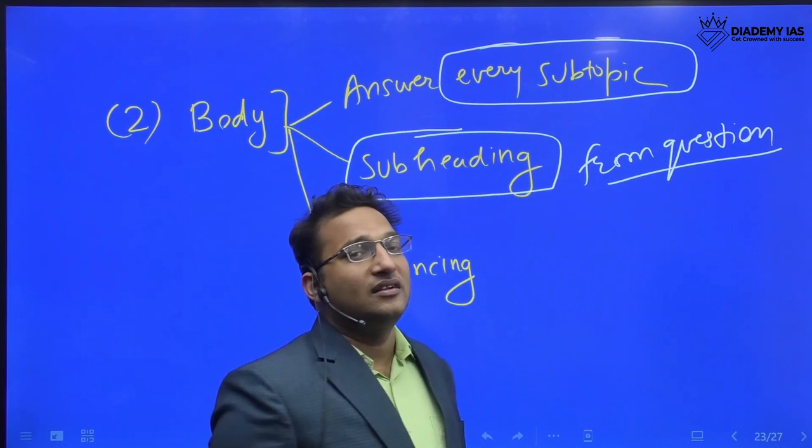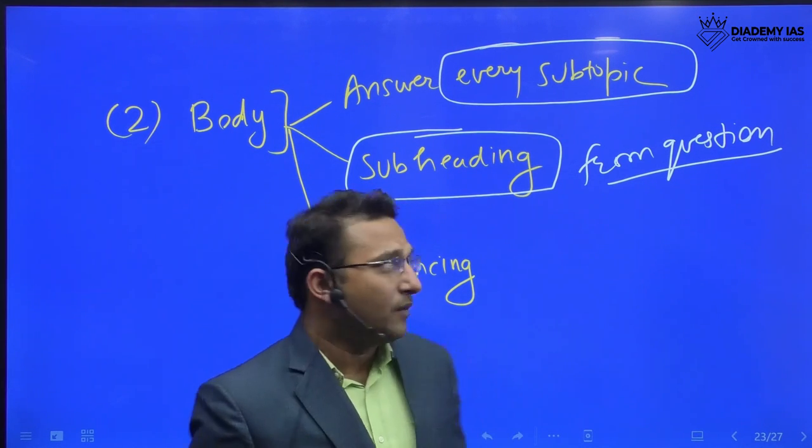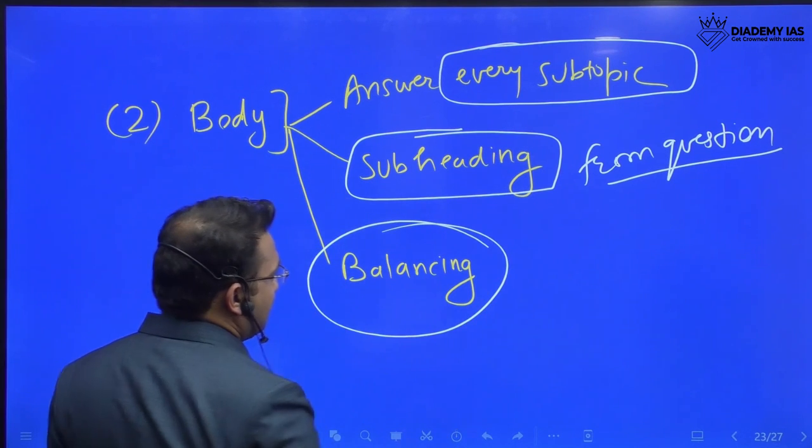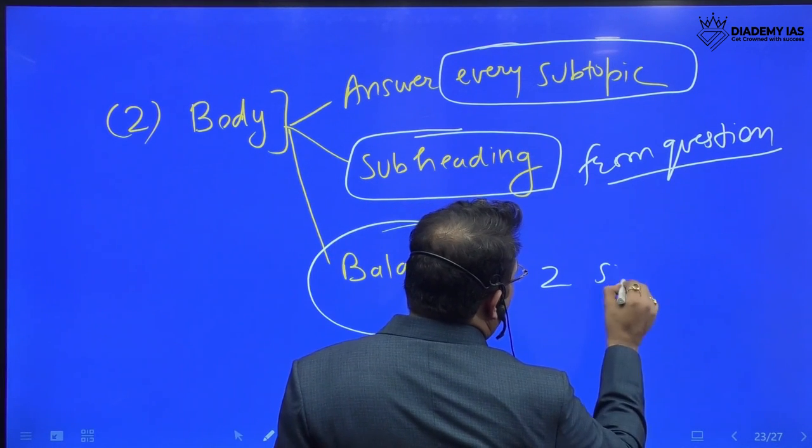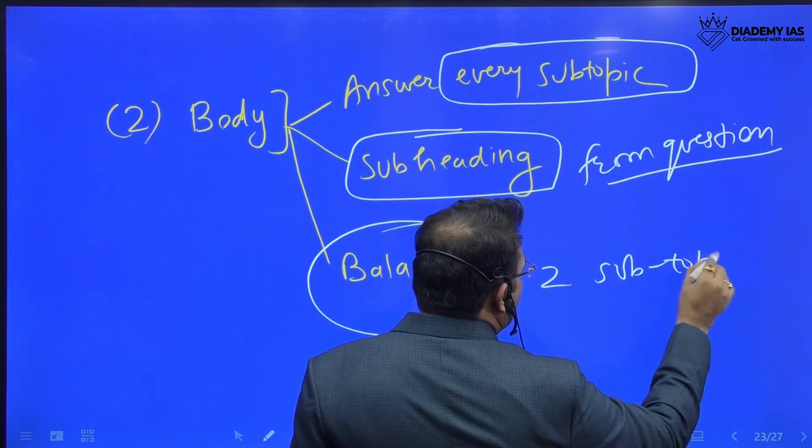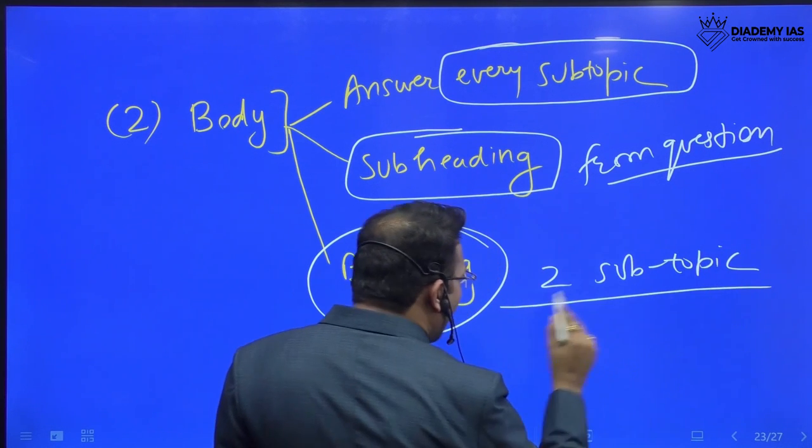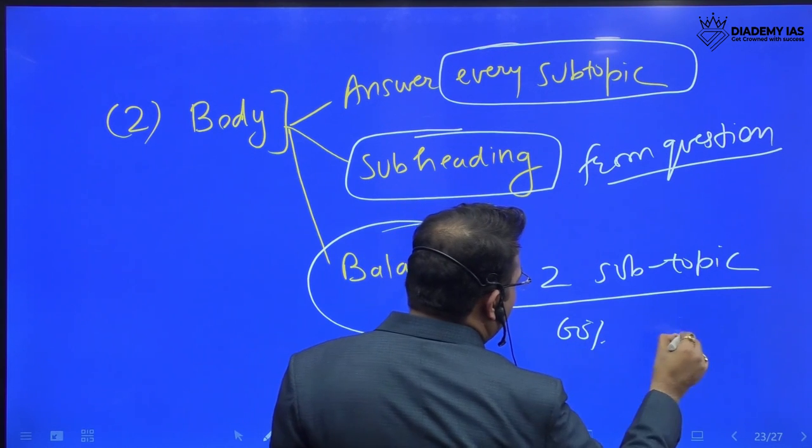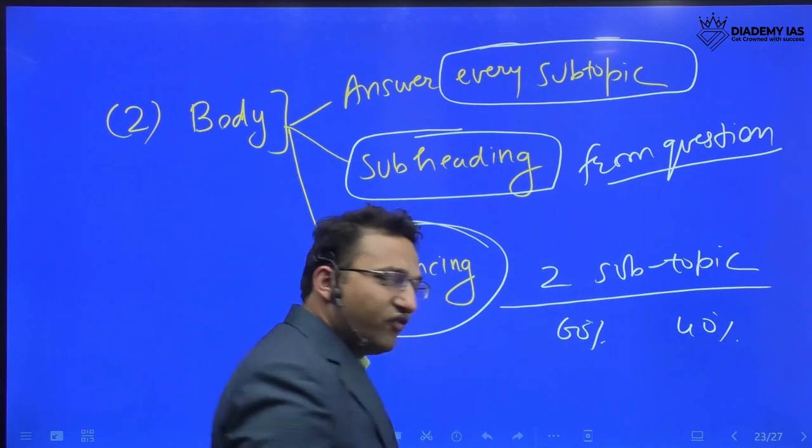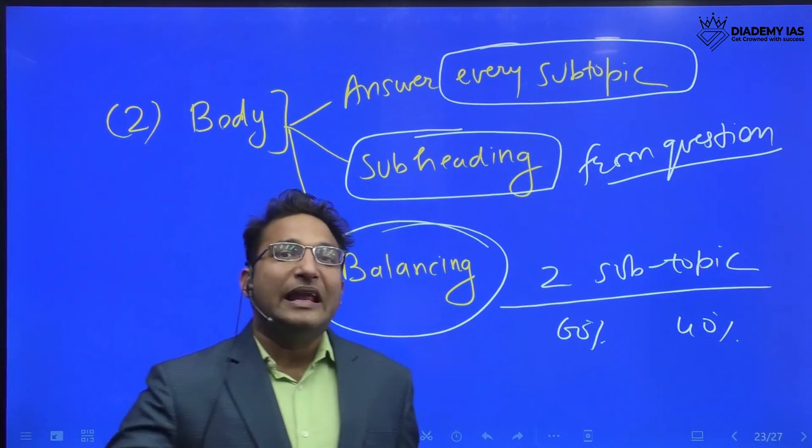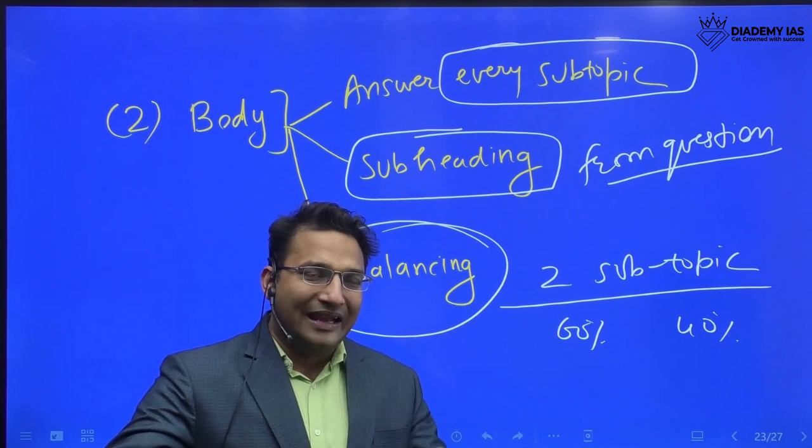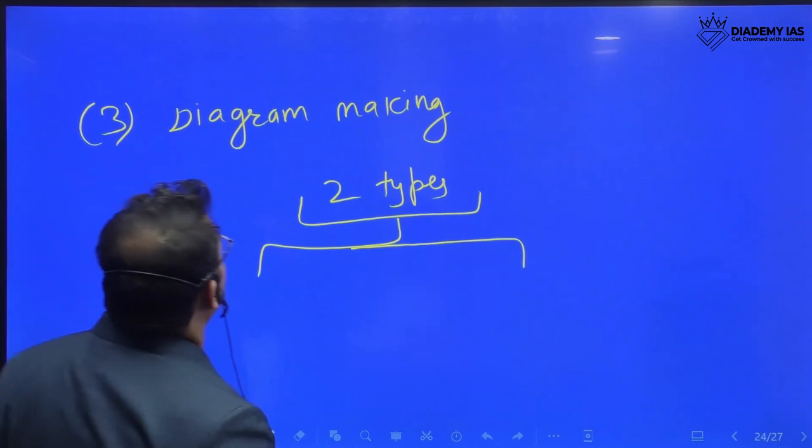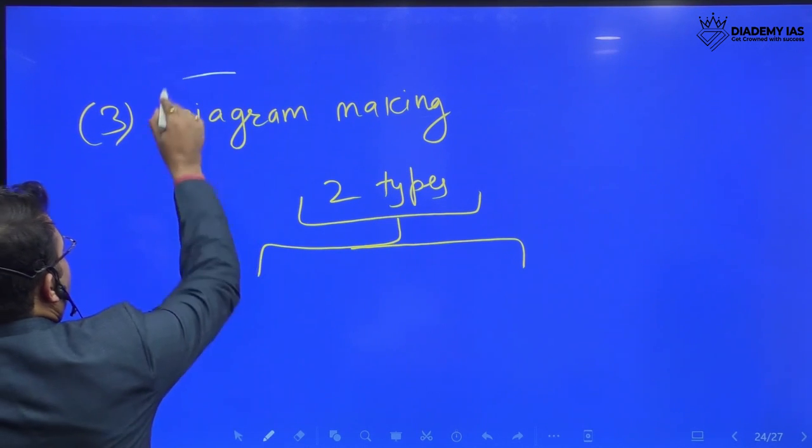Third important thing is that you have to balance. Suppose there are two subtopics which are being asked in the question, so you have to focus equally. At least if not equally, then maybe 60% or 40% between first and second topic. This should not be imbalanced. You should balance the content.